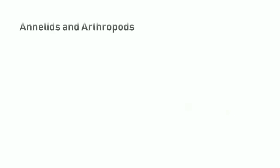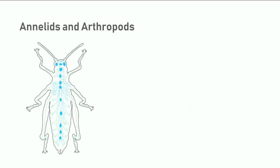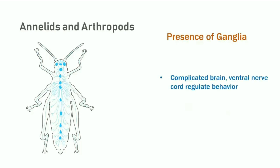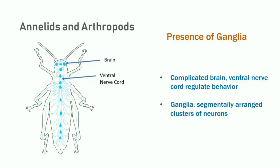More complex invertebrates such as segmented worms and arthropods have many more neurons and a more complex nervous system. They have a complicated brain, a ventral nerve cord that regulates behavior, and ganglia — segmentally arranged clusters of neurons.